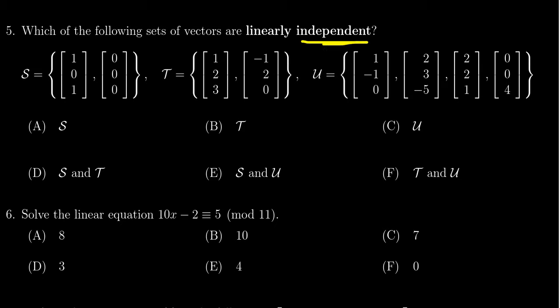Pay attention to the language right here. If the question were asking which of the following sets of vectors are linearly dependent, that would affect my final choice. But either way, I do have to go through and check: is S independent or dependent, is T independent or dependent, is U independent or dependent? So let's look at choice S.